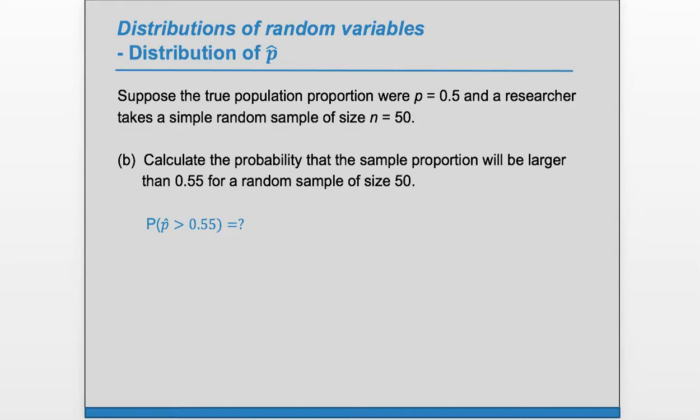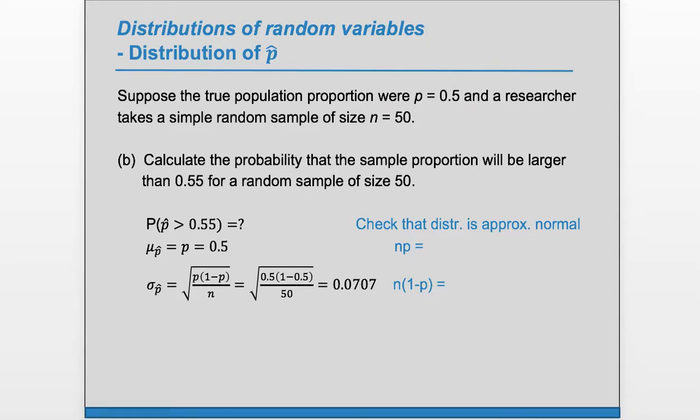We need to find the mean or expected value, but the mean of the sample proportion is just the true proportion, and that's 0.5. So there's no calculation to be done there. For the standard deviation, we've already calculated that.